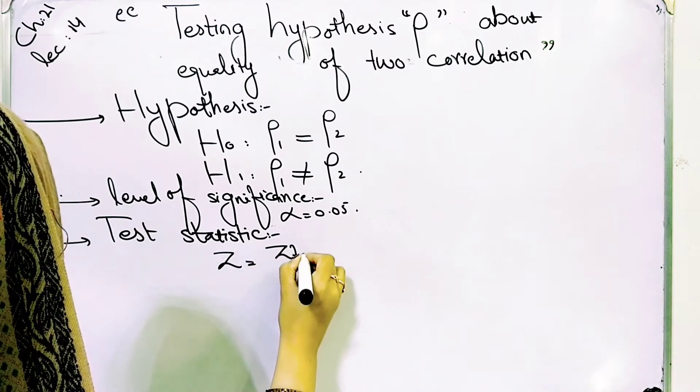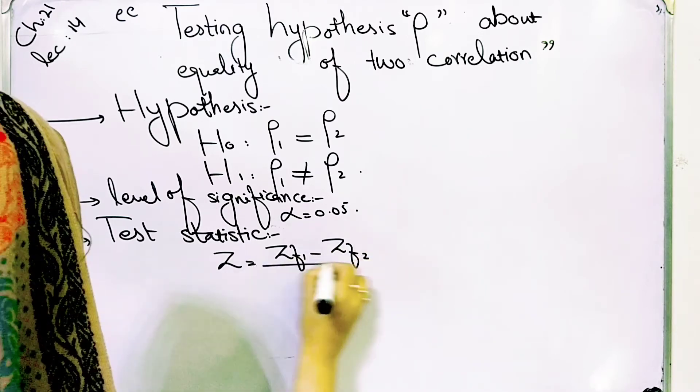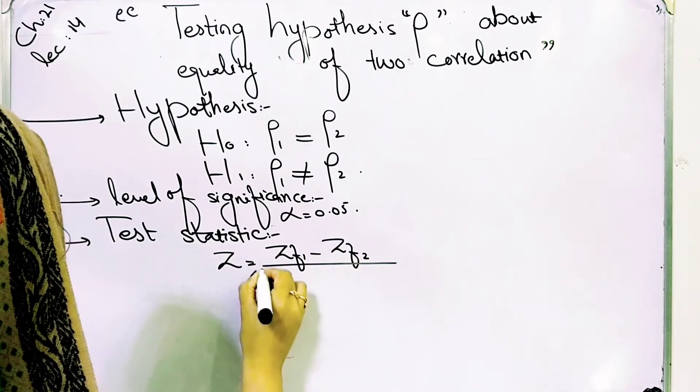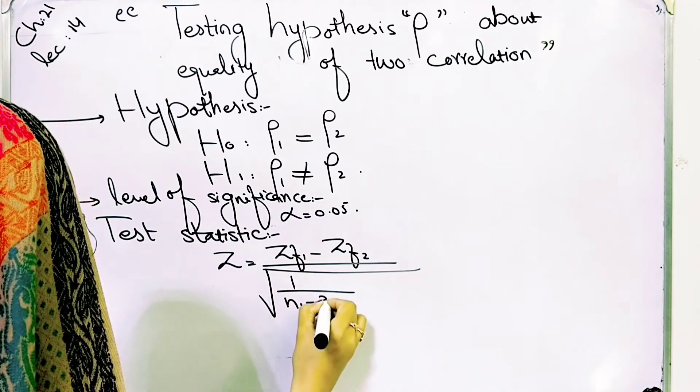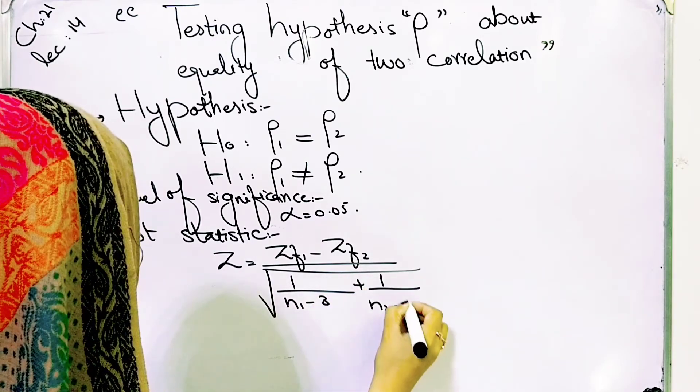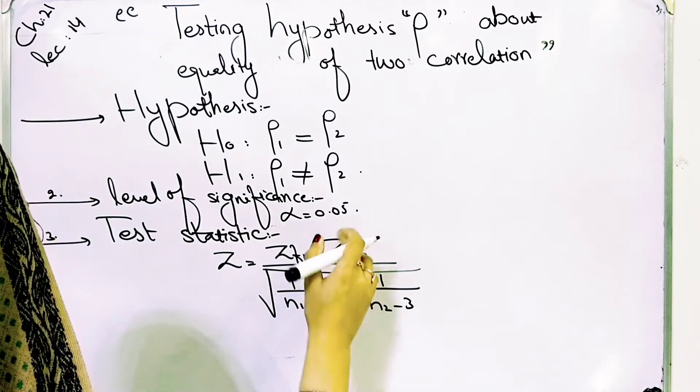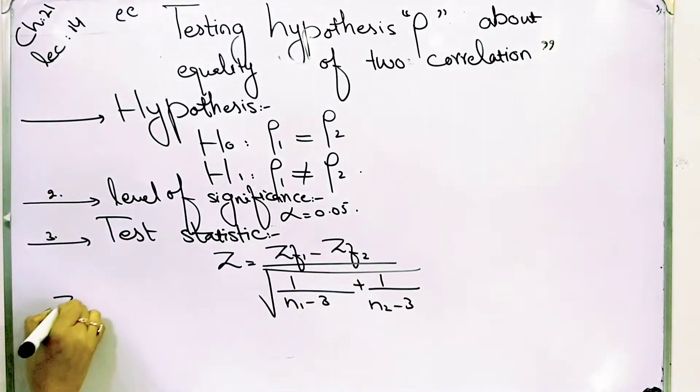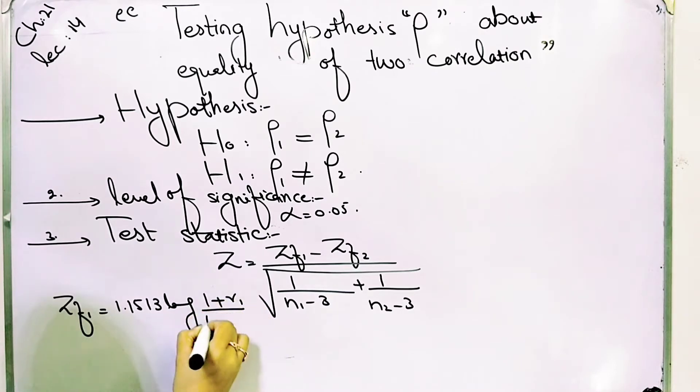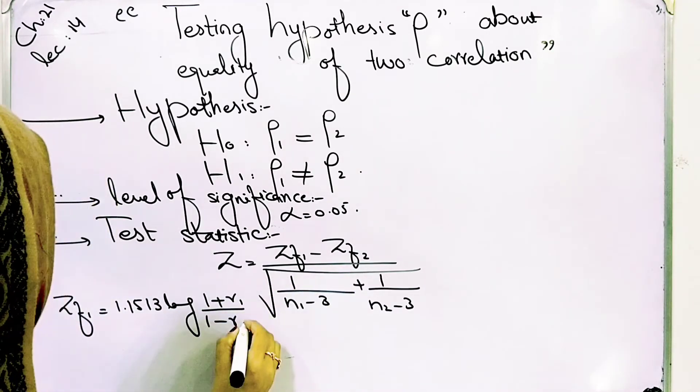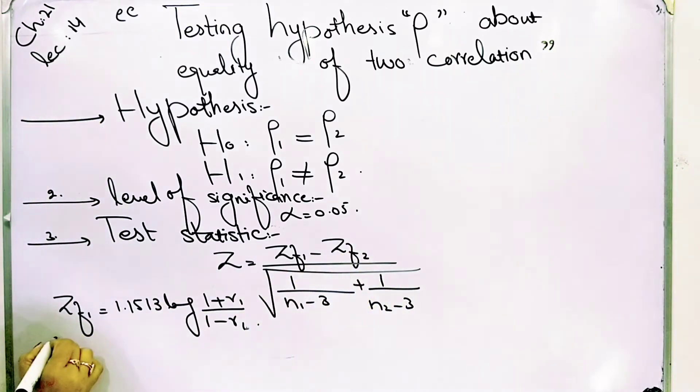ZF1 minus ZF2 divided by the square root of 1 over N1 minus 3 plus 1 over N2 minus 3. ZF1 is 1.1513 log of 1 plus R1 over 1 minus R1. ZF2 is 1.1513 log of 1 plus R2 over 1 minus R2.